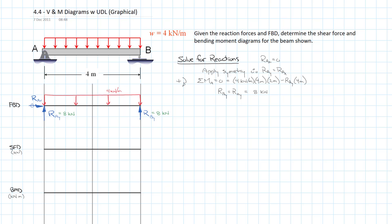In this problem we have a uniformly distributed load of magnitude 4 kilonewtons per meter. I've already gone ahead, done the free body diagram, and solved for the reactions — you can see those laid out on the sheet. What I want to do is jump right into the shear force diagram, apply those relationships we discussed in the last video, and use them effectively in generating the shear force and bending moment diagram.